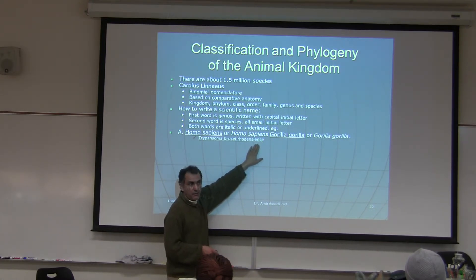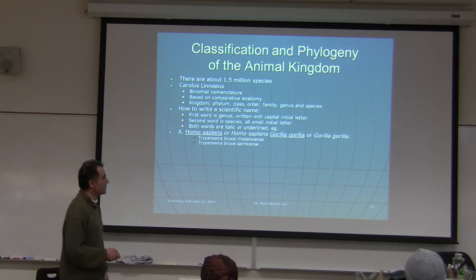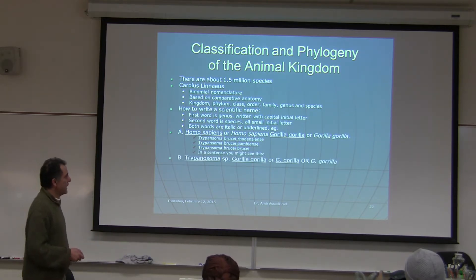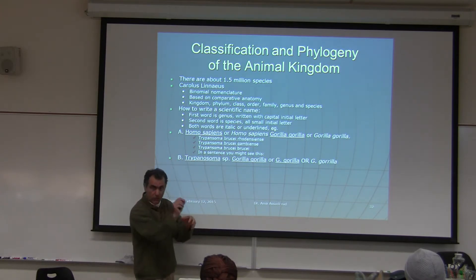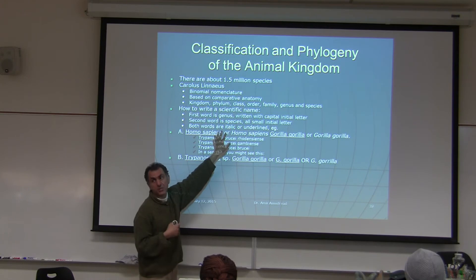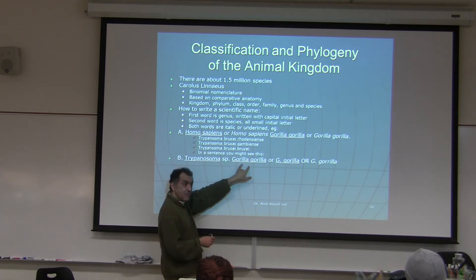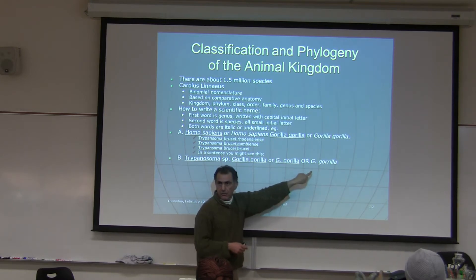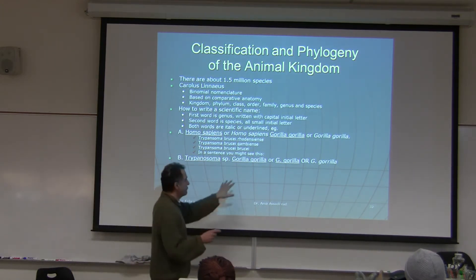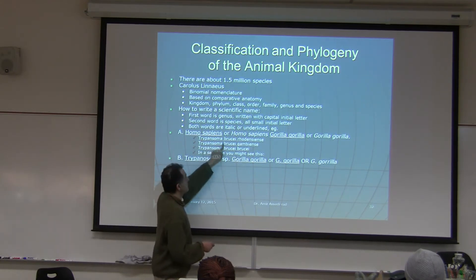Some organisms have three names — a subspecies. For example, Trypanosoma brucei rhodesiense and Trypanosoma brucei gambiense. In a sentence, instead of writing the full genus name repeatedly, you can abbreviate it: T. brucei after the first full use. You can also write 'Trypanosoma sp.' to refer to all species of that genus.